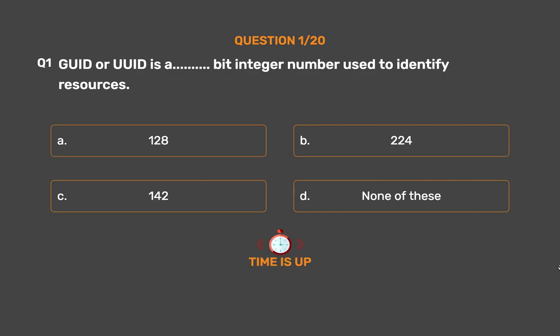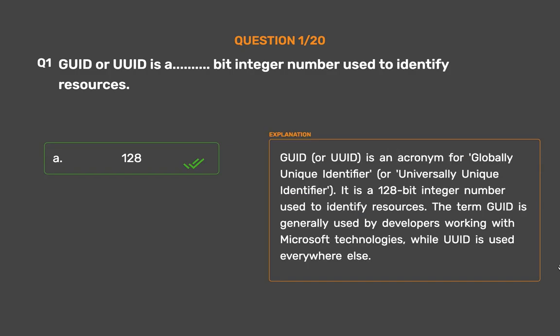The correct answer is Option A: 128. GUID is an acronym for Globally Unique Identifier or Universally Unique Identifier. It is a 128-bit integer number used to identify resources. The term GUID is generally used by developers working with Microsoft technologies, while UUID is used everywhere else.